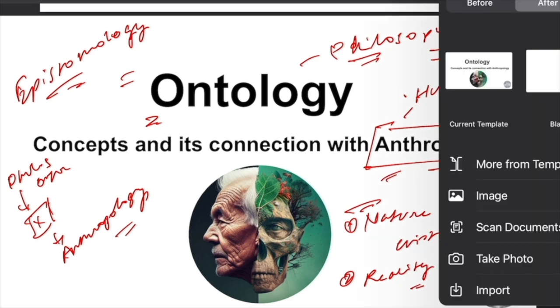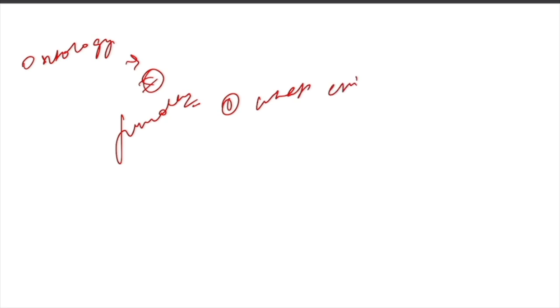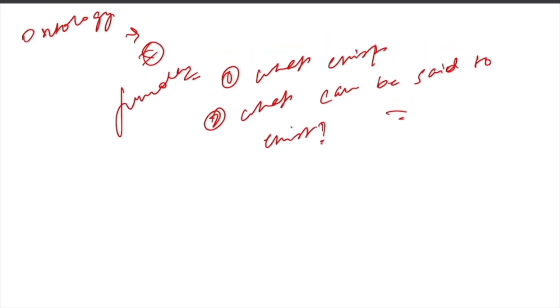The relationship between ontology and anthropology, and how they intersect in the study of human societies and cultures, is what we will look at here. Ontology is concerned with the fundamental nature of existence, including two main fundamental questions: what exists, and what can be said to exist.